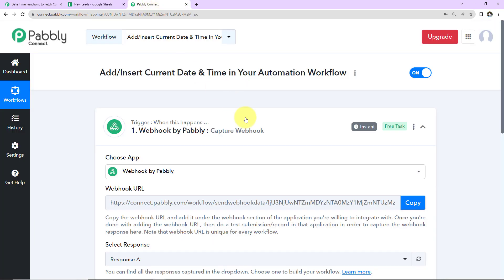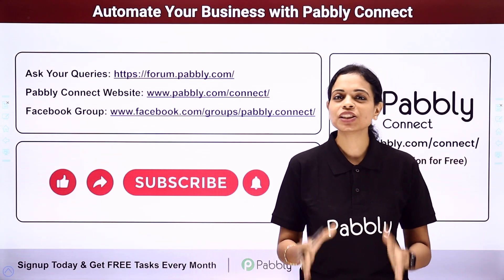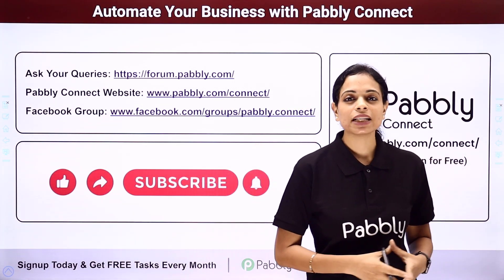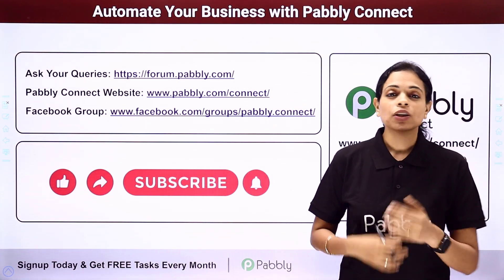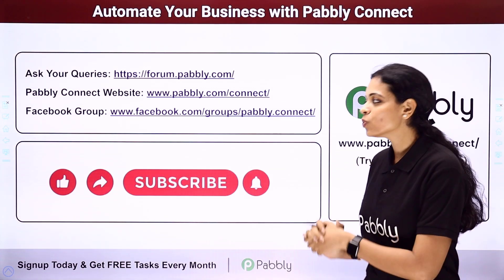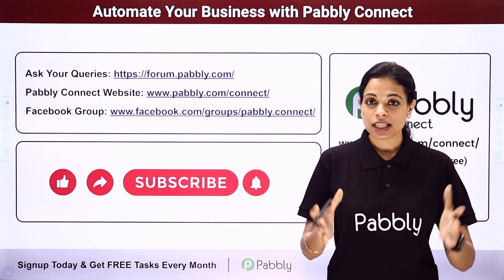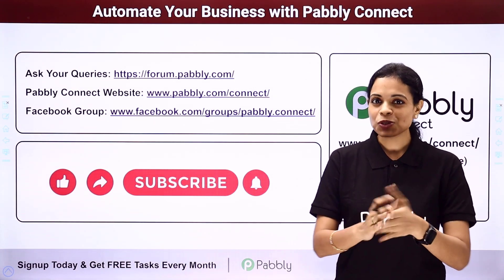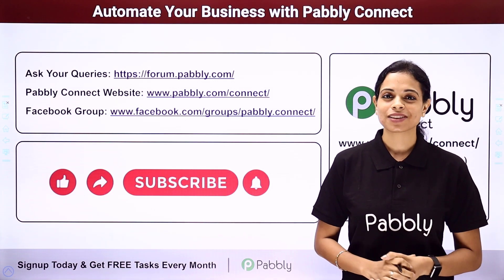This was an extremely easy and helpful way to add or insert current date and time in your automation workflow. If you have any doubt, you can refer to the workflow link given in the video description — I am also going to share the functions in the description box. You can integrate multiple applications using Pabbly Connect. To ask any queries, write at forum.pabbly.com or visit our website at www.pabbly.com. You can also visit our Facebook group for the latest updates on integrations and applications. If you found this video helpful, share it with your friends and colleagues. Do not forget to like, share, and subscribe. Take care of yourself.